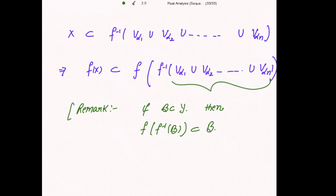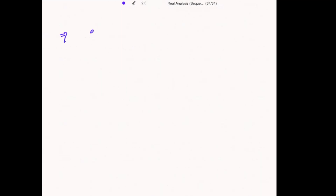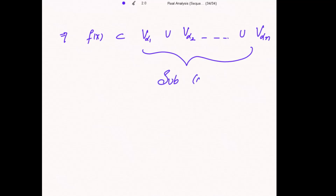Using this result, we write that f(X) is a subset of V_α₁ union V_α₂ union ... union V_αₙ. That becomes the finite subcover of f(X). Therefore f(X) is a compact set.